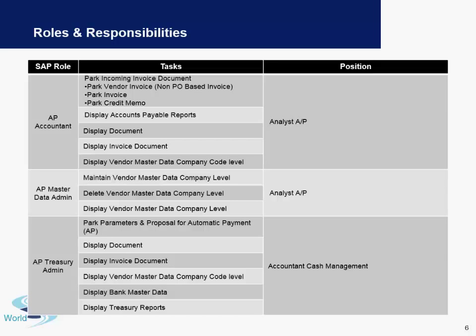The AP Accountant is also responsible for displaying reports in the Accounts Payable area, displaying invoices, and displaying vendor master data details at the company code level. On the rightmost column you will observe something called position information — this is a very generic column. In some companies they are called Analyst, Accounts Payable, but they may be called something else, so this column should not be taken as a thumb rule.